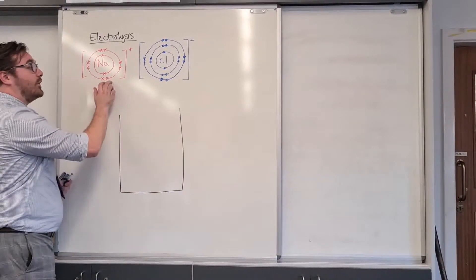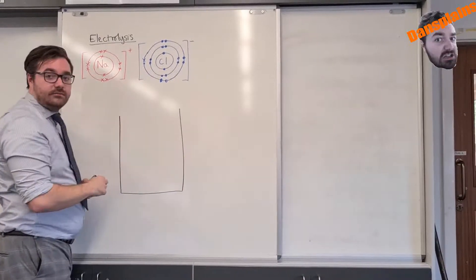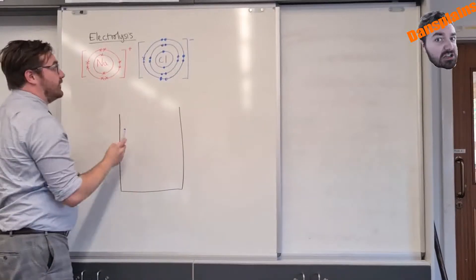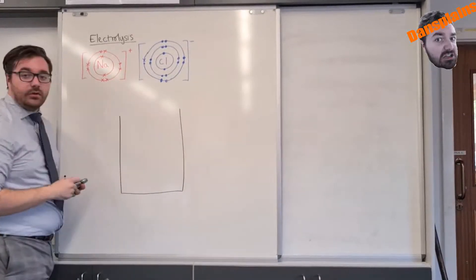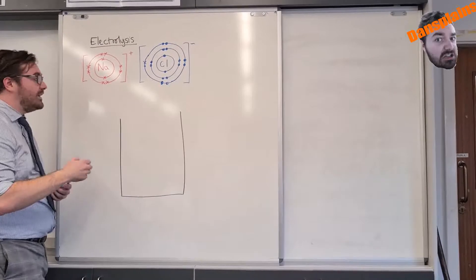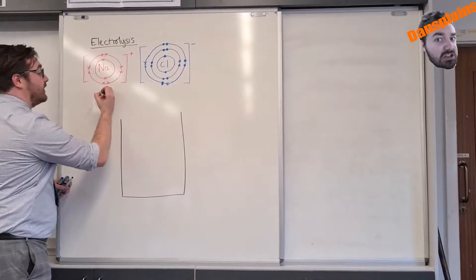In a previous video we've looked at how we can put ions together. For instance, the sodium has given one electron to the chlorine. Now for the remainder of this video I'm going to be looking at these ions.